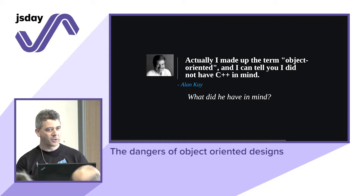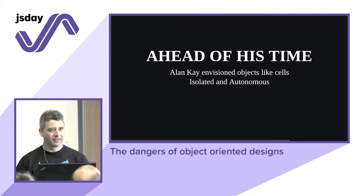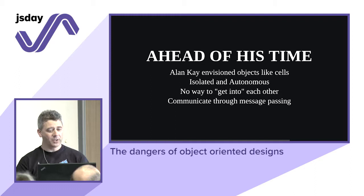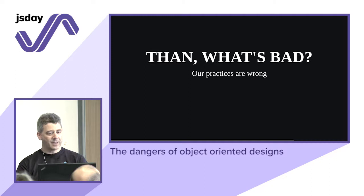What did Alan Kay have in mind? He invented object orientation in the 80s and he didn't have in mind what we do today — he was really ahead of his time. He envisioned objects like cells: isolated and totally autonomous, with no way to get into an object. They communicate through message passing — not method invocation which mimics calling a function in machine code, but an abstraction layer using message passing, possibly asynchronous.